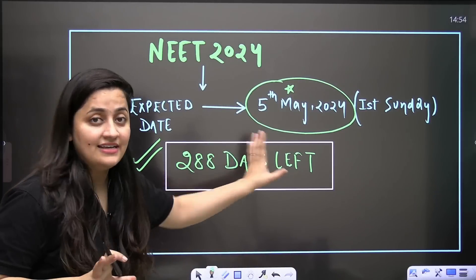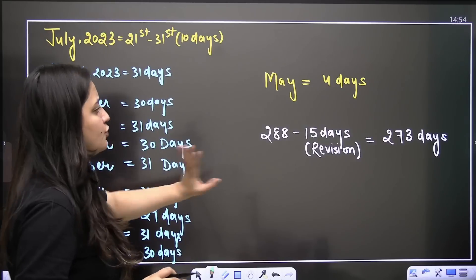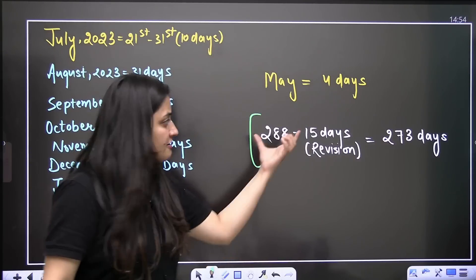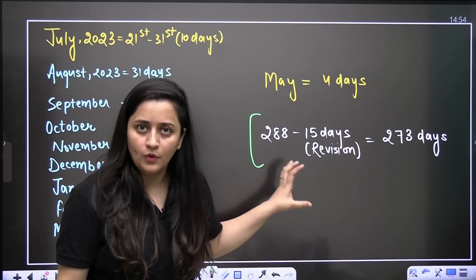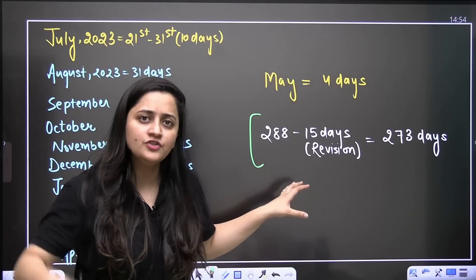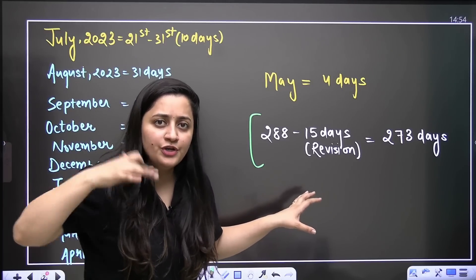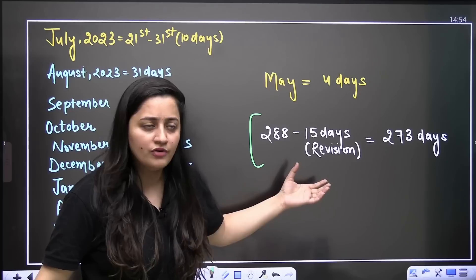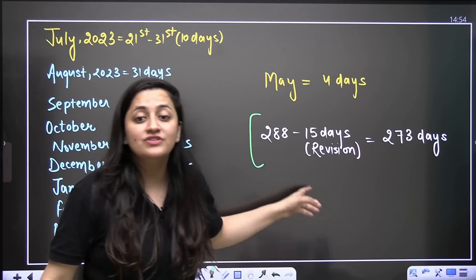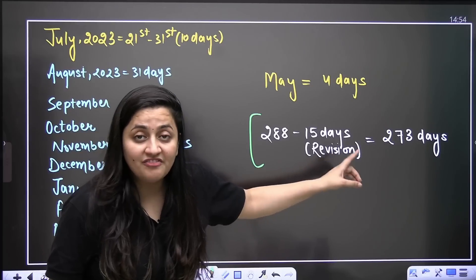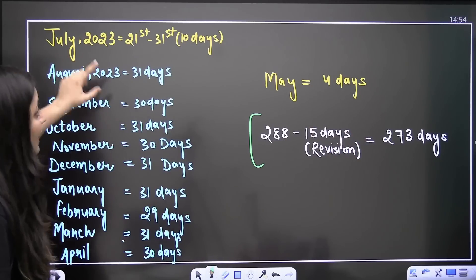So 288 days are left. Now out of these 288 days, let's say 15 days are for revision. Obviously you need that much time for revision in April or May. You need to complete the syllabus, revise it again and again, and go for the mock test.